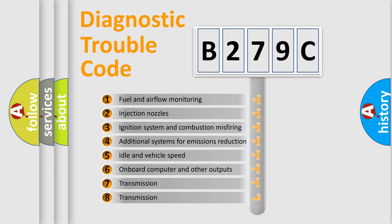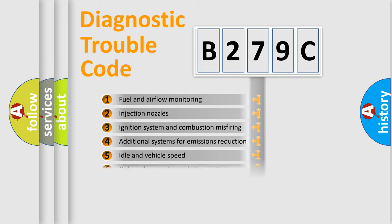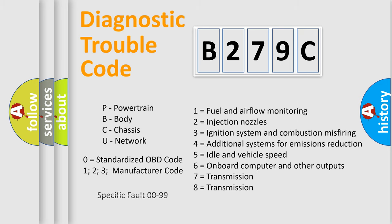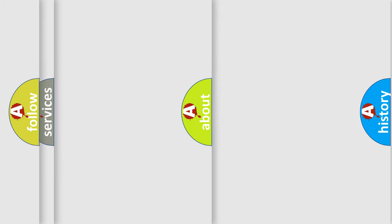The third character specifies a subset of errors. The distribution shown is valid only for the standardized DTC code. Only the last two characters define the specific fault of the group. Let's not forget that such a division is valid only if the second character code is expressed by the number zero.